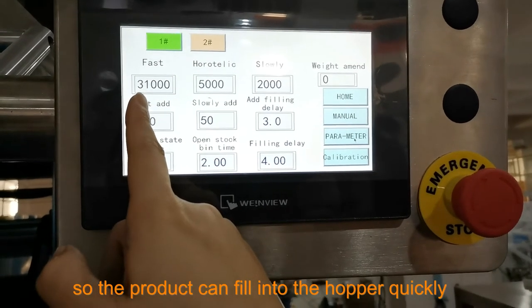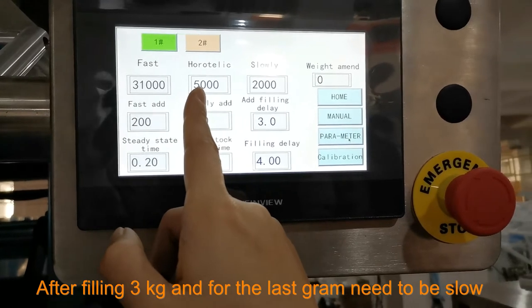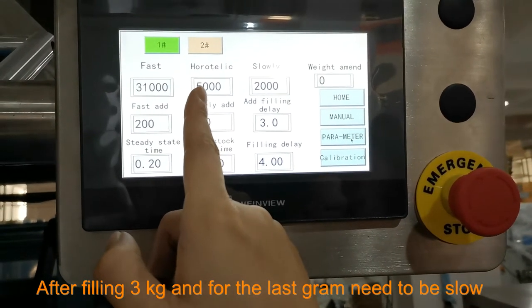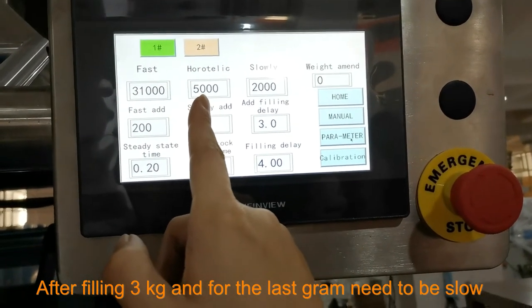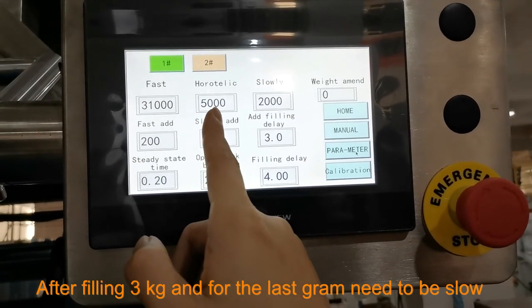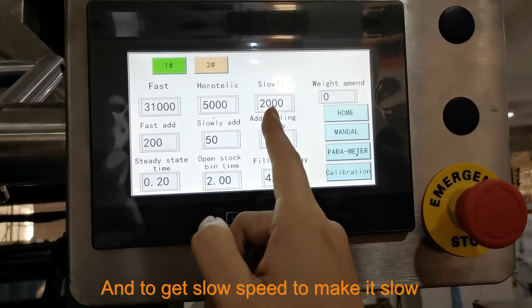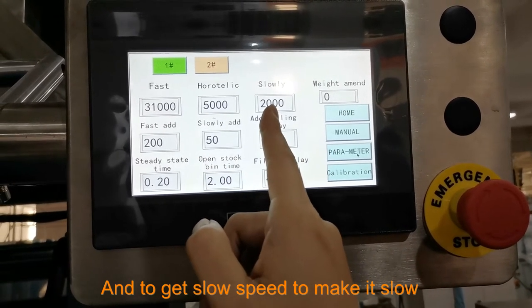And in the middle, after filling 3,000 grams, for the last gram it needs to be a little bit slow to get the accuracy. This slow speed needs to be made slow.